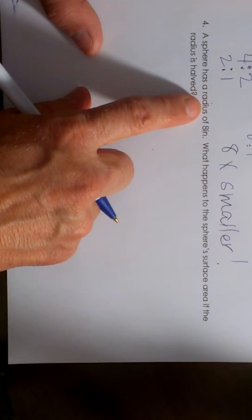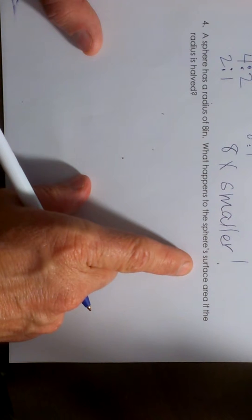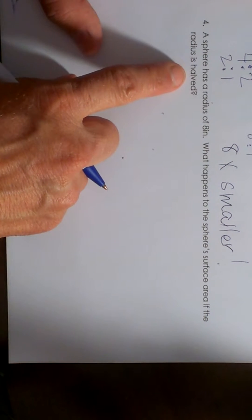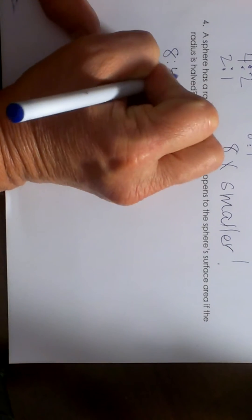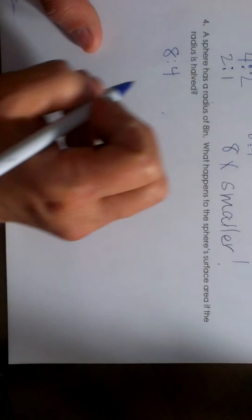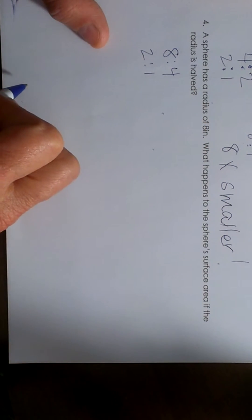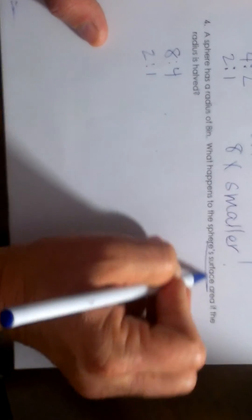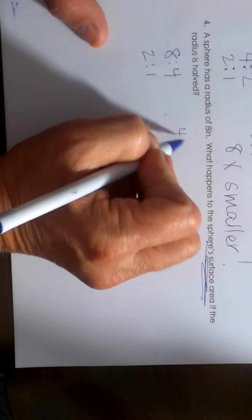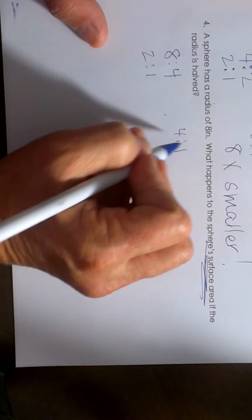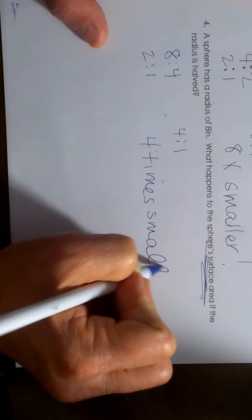A sphere has a radius of eight. What happens to the sphere's surface area if the radius is halved? If the radius is eight, half of that would be four, so the ratio is two to one. For surface area we square it, so it's four to one — the surface area is going to be four times smaller, because it's getting smaller.